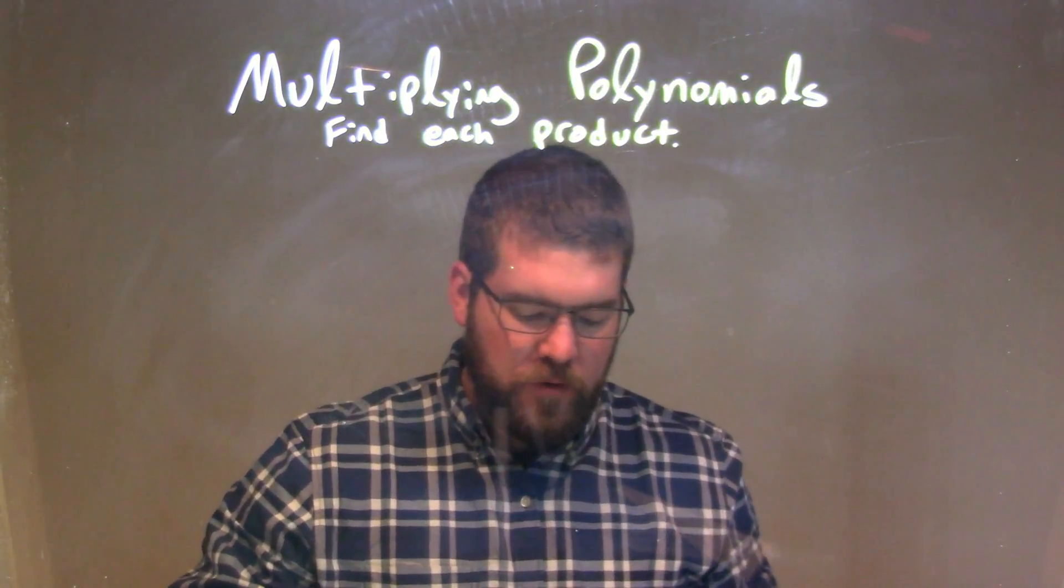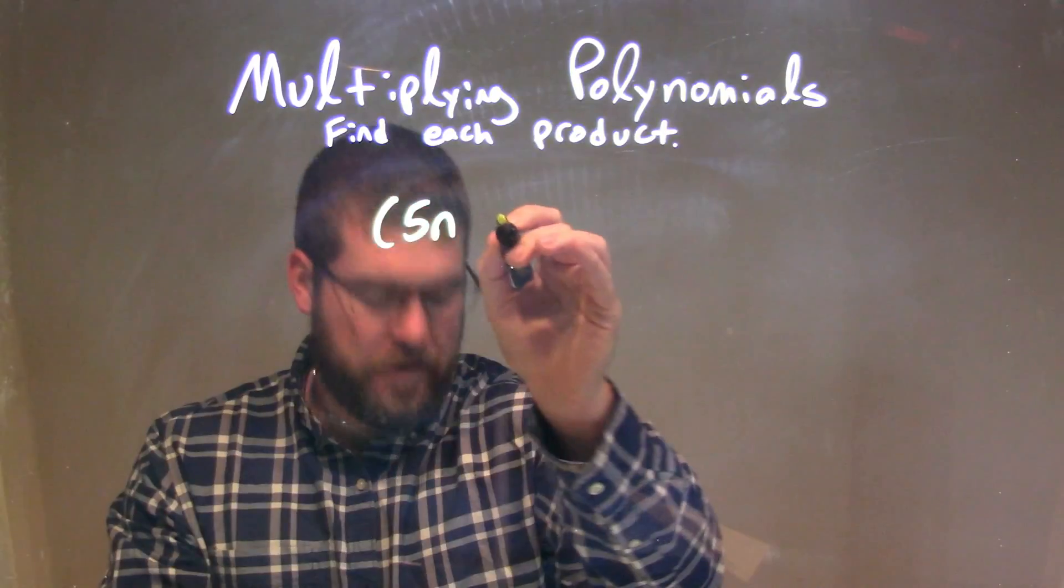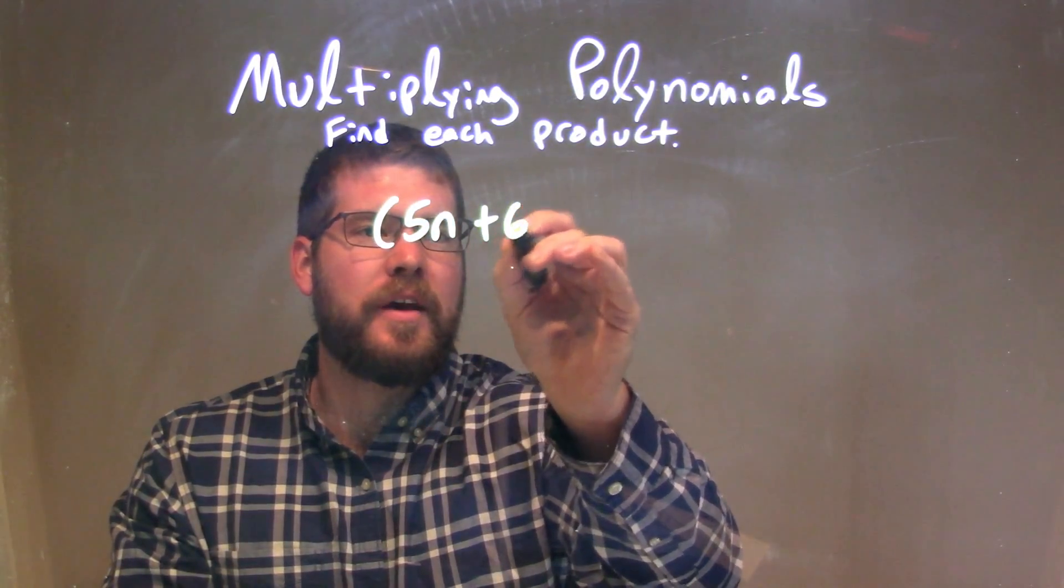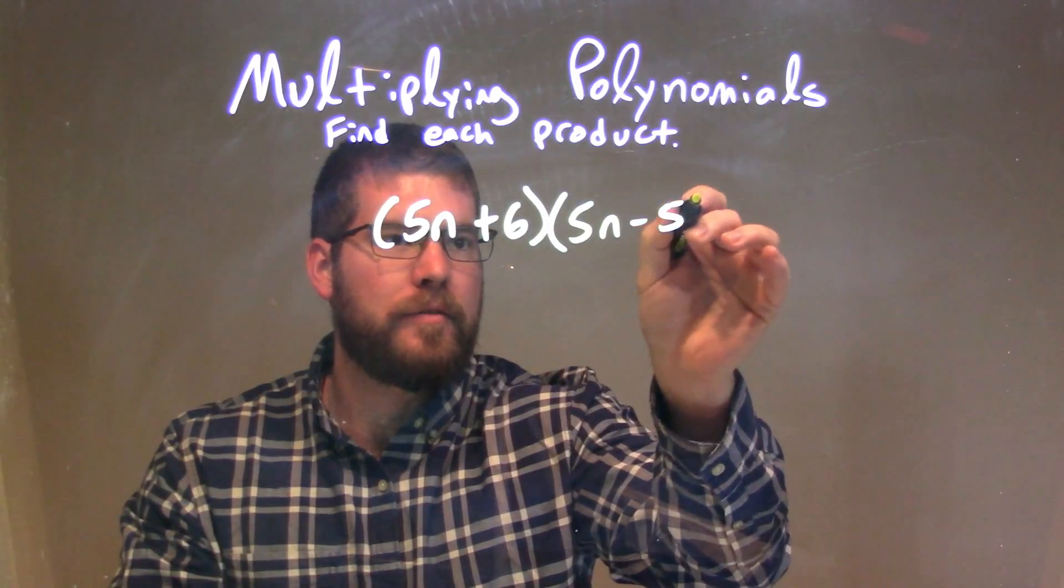I'm going to find each product. So if I was given this problem here, 5n plus 6 times 5n minus 5, okay?